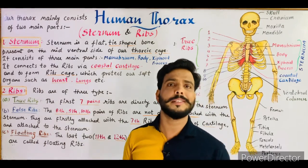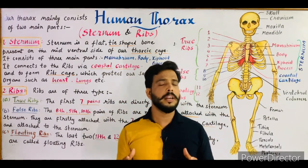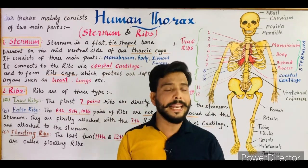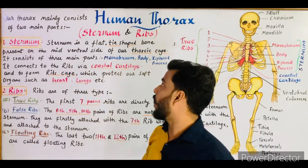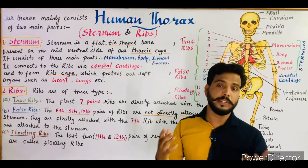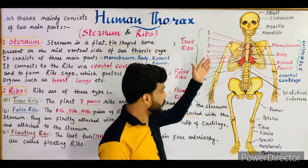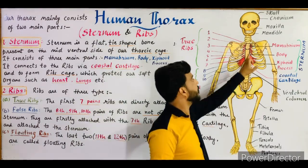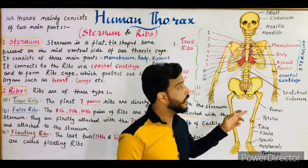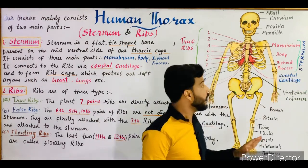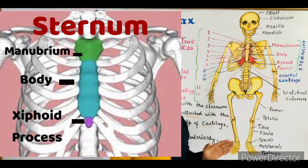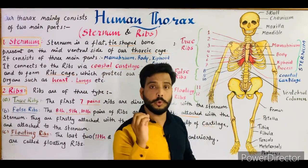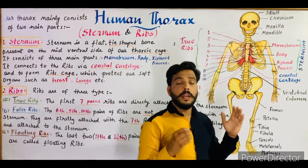First of all, what is the position of our thorax in our skeletal system? Our thorax is situated in the trunk region and it forms the anterior part of the trunk. Our thorax is mainly made up of two types of bones: the sternum and ribs. As you can see in this diagram of the human skeletal system, this is our thorax. It consists of a central flat tie-shaped bone called the sternum, and with this sternum there are total 12 pairs of ribs attached on both sides — 12 on this side and 12 on this side.